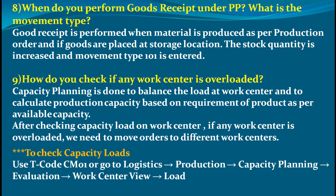When you perform goods receipt under PP, what is the movement type? Goods receipt is performed when material is produced as per a production order. Once goods are placed at a storage location, the stock quantity is increased and movement type 101 is entered. So goods receipt is performed when the material is produced as per the production order, and once placed in the storage location, the movement type used is 101.